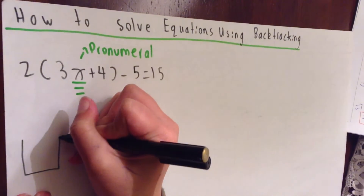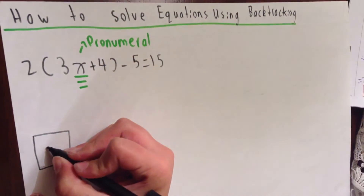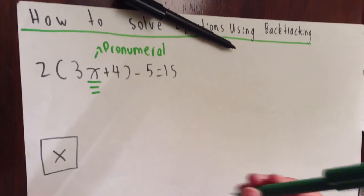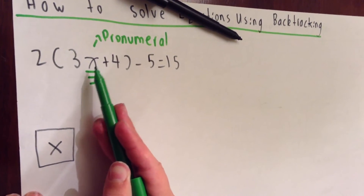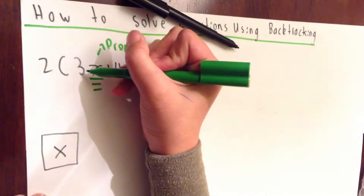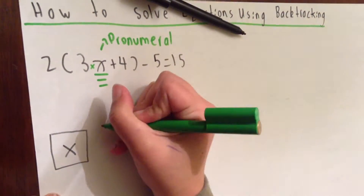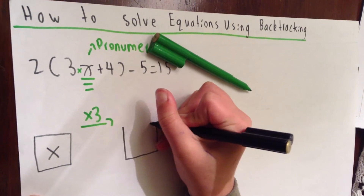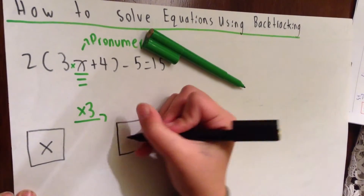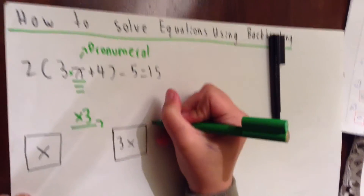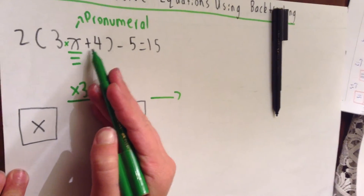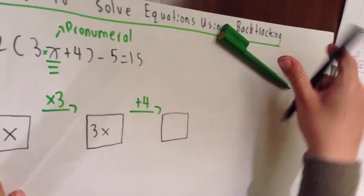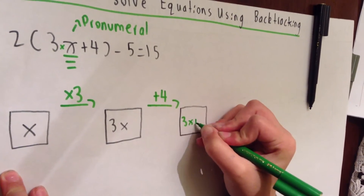So we draw our first box, and every time we always put the pronumeral in the first box. Now we always do what's inside the bracket first — if you know what BODMAS means, B is for brackets, so we always do that first. So what's the first operation being done to x? It's the 3, and whenever there's no operation sign it's always a times. So now we draw an arrow, times that by 3, and draw another box. Whenever you times a pronumeral by a number, the number goes in front of the pronumeral. Now we draw another arrow. What's the next operation in the bracket? Plus 4. We write plus 4 and draw another box, giving us 3x plus 4.